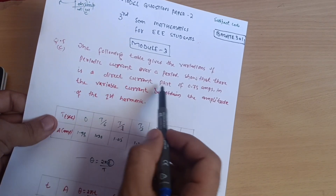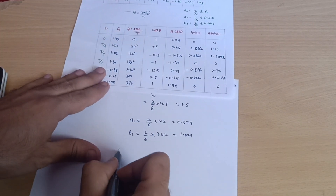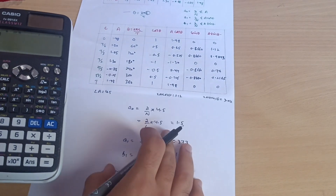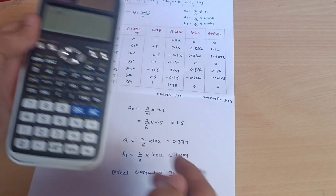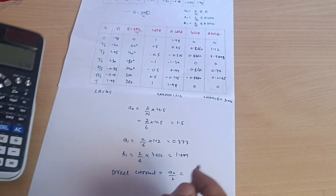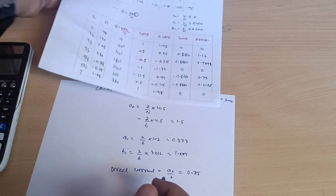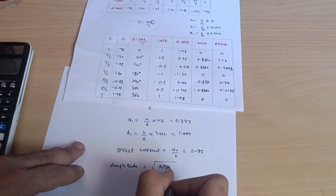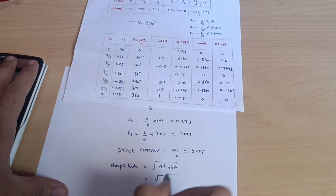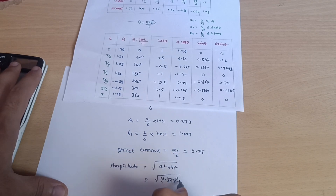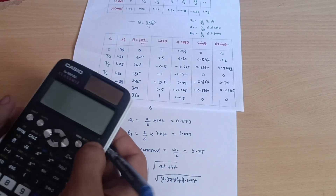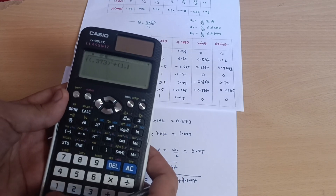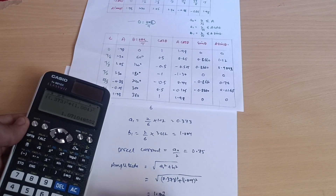The question asks us to show the direct current part is 0.75 A. Using DC = a₀/2 = 1.5/2 = 0.75 A — confirmed. For the amplitude of the first harmonic, the formula is √(a₁² + b₁²) = √(0.373² + 1.004²) = √(0.139 + 1.008) ≈ 1.07. So the amplitude of the first harmonic is 1.07.